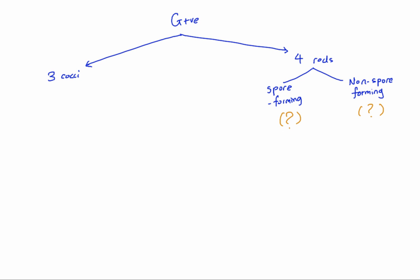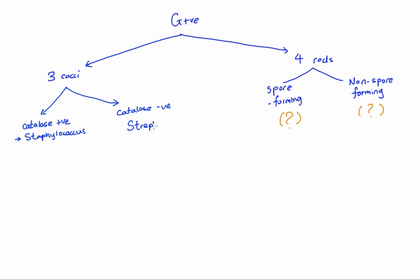Now let's talk about the cocci, which is what we're focusing on today. We can basically divide them into catalase positive and catalase negative. Catalase positive is Staphylococcus — that's our subject today — and catalase negative was Streptococcus.